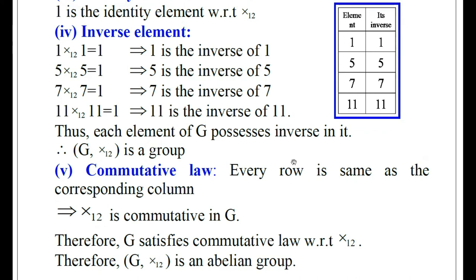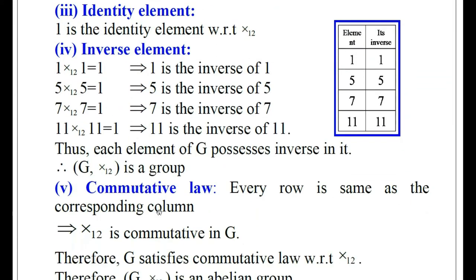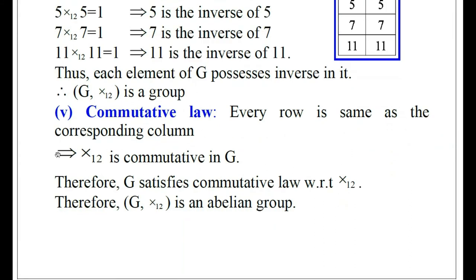Commutative law: every row is the same as the corresponding column. First row: 1,5,7,11 — first column: 1,5,7,11. Second row: 5,1,11,7 — second column: 5,1,11,7. Third row: 7,11,1,5 — third column: 7,11,1,5. Fourth row: 11,7,5,1 — fourth column: 11,7,5,1. Therefore, multiplication modulo 12 is commutative in G. G satisfies all five axioms: closure, associative, identity, inverse, and commutative. Therefore, the algebraic structure G with multiplication modulo 12 is an abelian group.